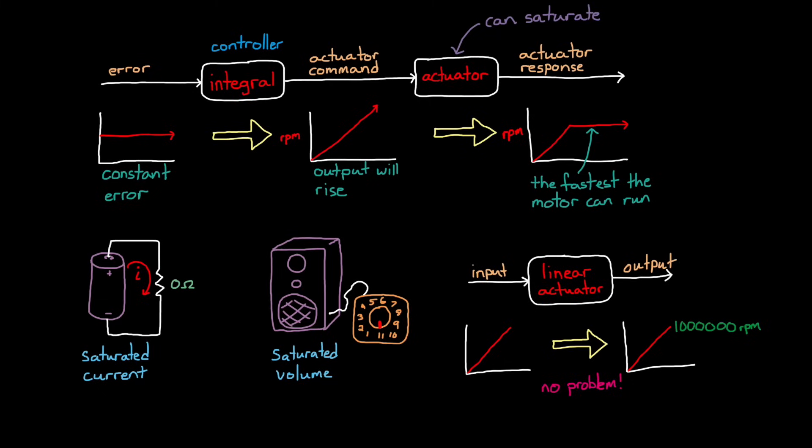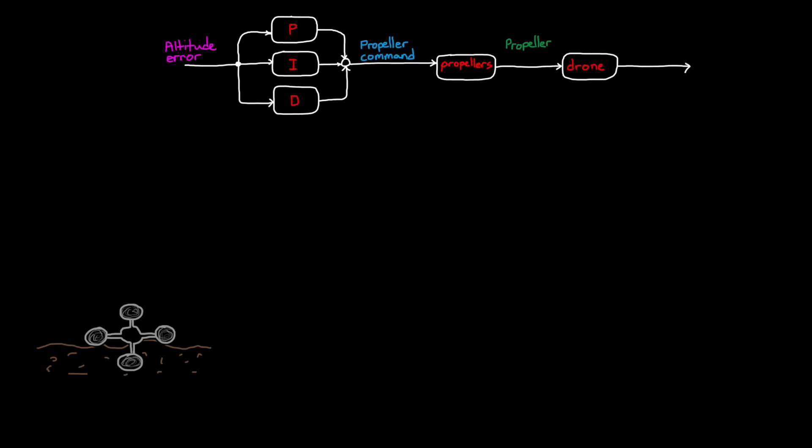We can figure out why by asking the question: how does our PID integral handle an actuator that saturates? Assume we have the drone from the last video, and we're trying to control its altitude with a PID control law. The altitude error goes through the three PID branches and then sums together to get a propeller command. The propellers are the actuators, and they react to that command and spin up or down to some speed. The propellers generate a force that lifts the drone, the process, into the air and changes its altitude. Again, for this example, we're going to see what happens only within the integral path.